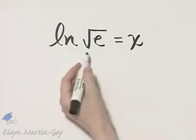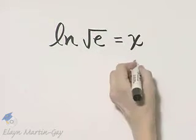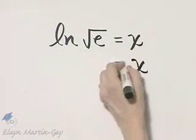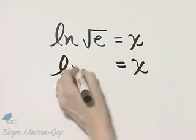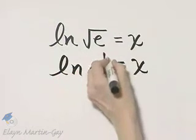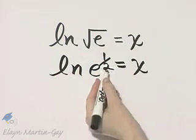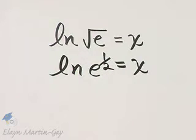We have the natural log of the square root of e, and notice the square root can be written as e to the one-half power because square root means exponent of one-half.